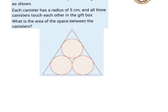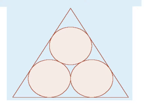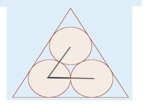From the problem, each canister has a radius of five centimetres. The radius from one centre to another is 10. Since all three distances between centres are 10, we can form an equilateral triangle. Because all sides are 10, all angles are equal, so each angle is 60 degrees.